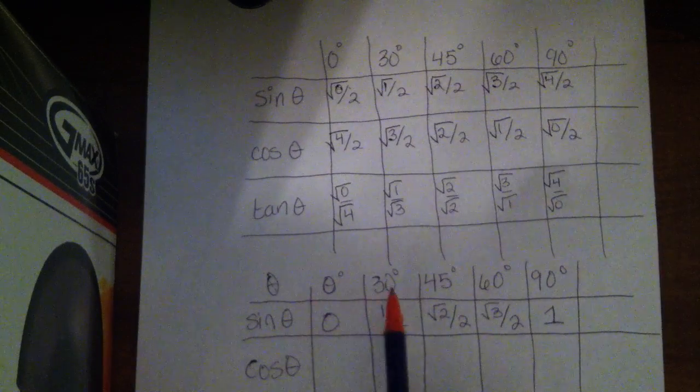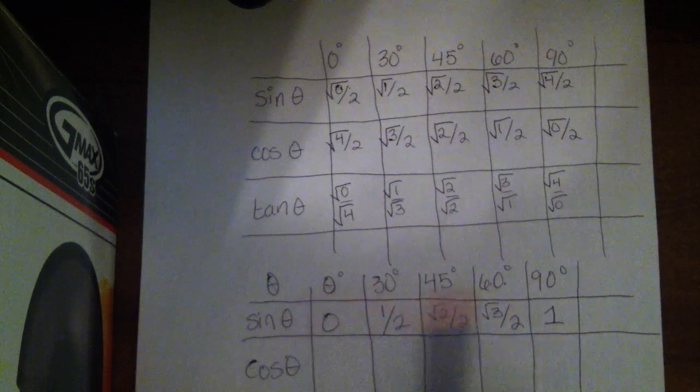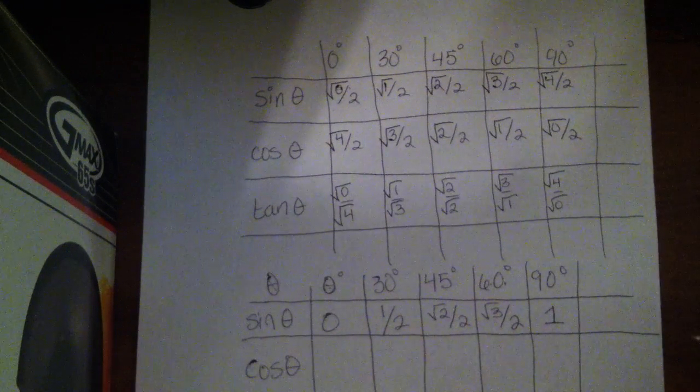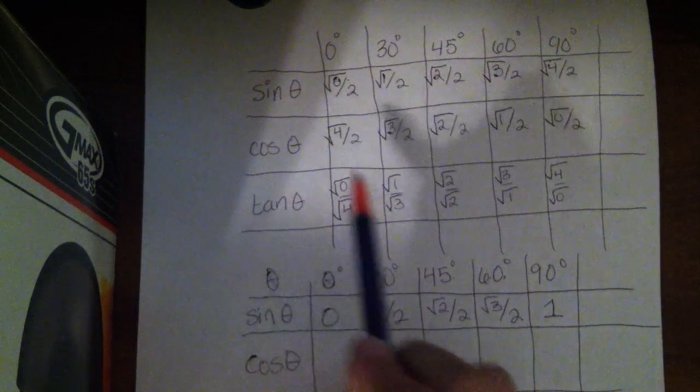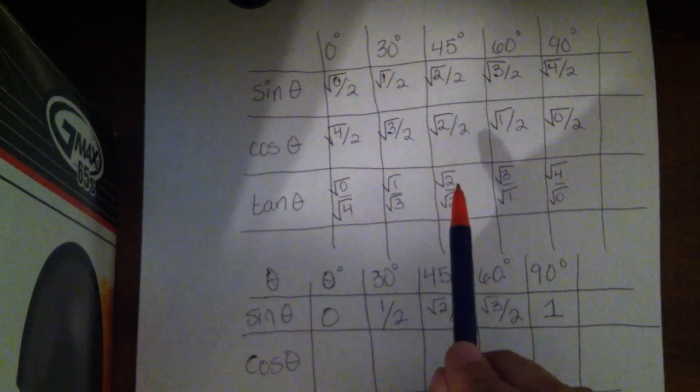So that's the sine of our three special angles, but we've also thrown in there 0 and 90, because their values follow along nicely with the pattern that we've just made. Now, the cosine values, remember, we made the cosine values exactly the same way, we just did it backwards.